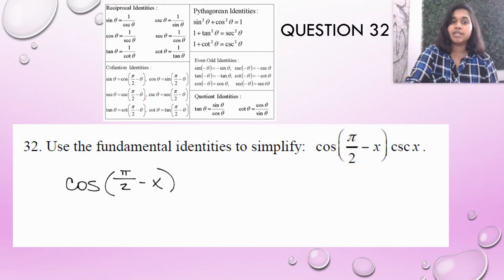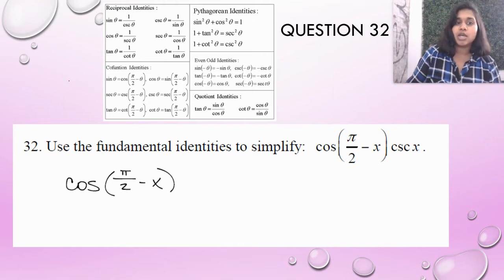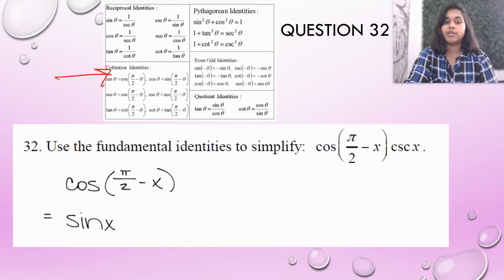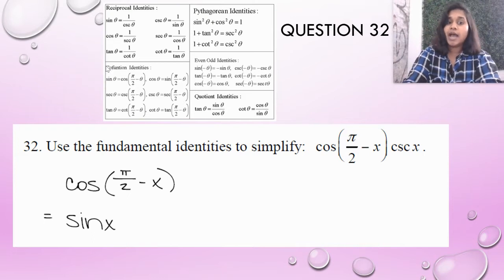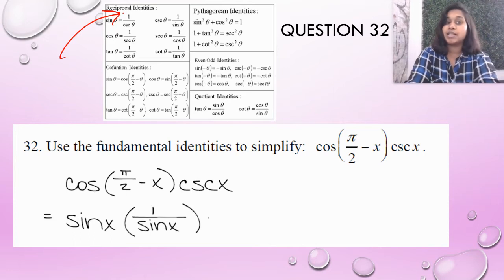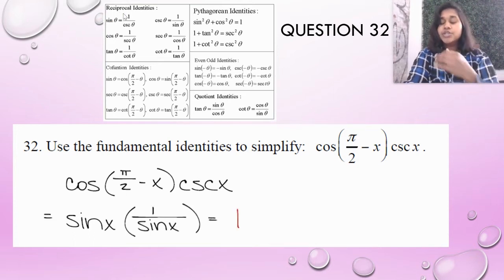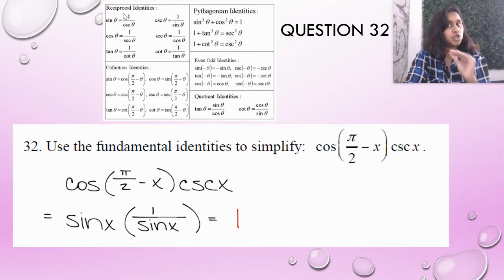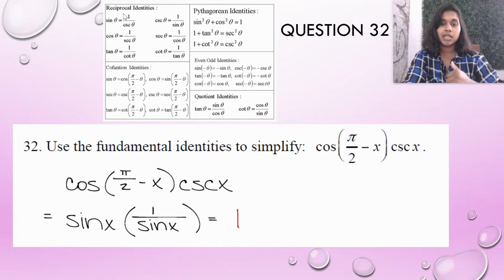I know cosine of π/2 minus x is a co-function identity, so it's just sine of x. Cosecant of x is a reciprocal identity, so it's one over sine of x. I multiply across and end up with just the number one. Super easy, but let's dive into something harder.